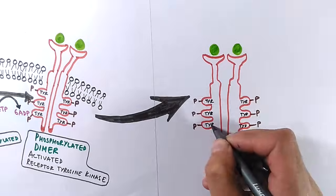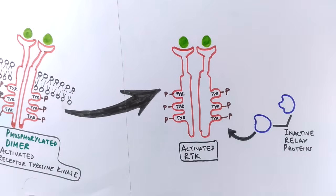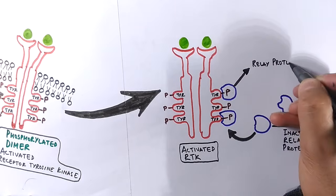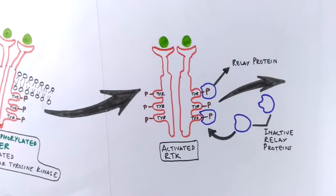We see inside the cell there are inactive relay proteins which are getting recruited by this activated RTK. Once they get recruited by the activated RTK, the RTK changes their shape and activates these relay proteins.